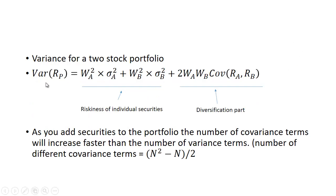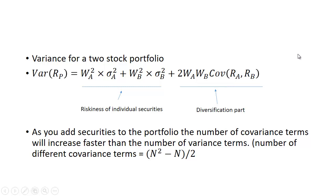Let me show you what the variance for a two-stock portfolio looks like. You have two securities A and B. It would be the weight in A squared times the variance of A, plus the weight in B squared times the variance of B, plus two times the weight in A times the weight in B times the covariance between A and B. That's how you get the portfolio variance.